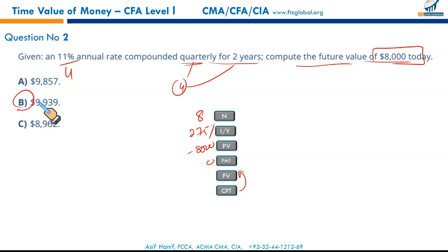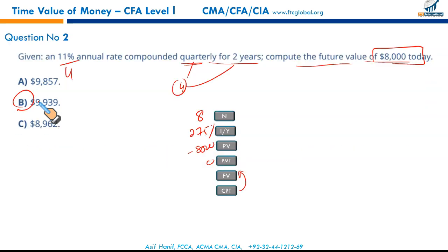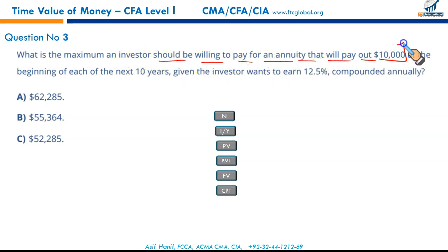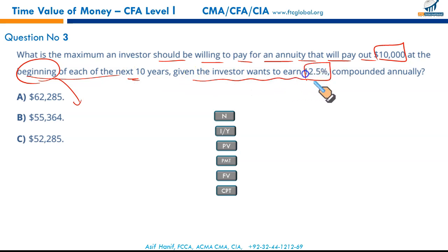We can do many questions this way rather than spending two to three minutes per question. We got it right: $9,939. Next — this is a question I would do using the calculator: what is the maximum an investor should be willing to pay for an annuity that will pay $10,000 at the beginning of each of the next ten years? Mind the word 'beginning' — it's an annuity due.